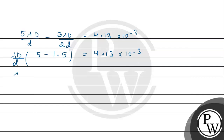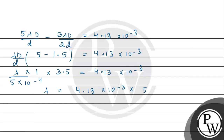Solving for lambda: small d = 0.5 mm = 5 × 10⁻⁴ m, capital D = 1 m. So lambda = (4.13 × 10⁻³ × 5 × 10⁻⁴) / (3.5 × 1). That gives lambda = (4.13 × 5 / 3.5) × 10⁻⁷ meters.